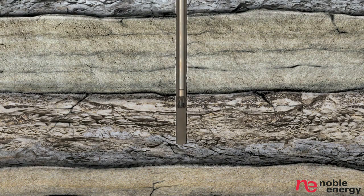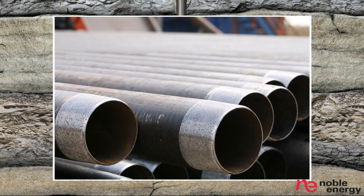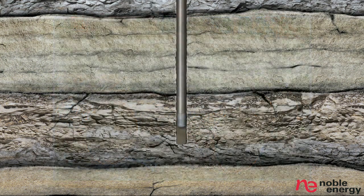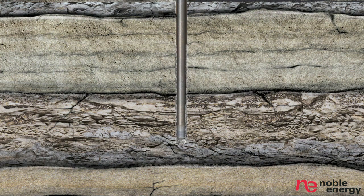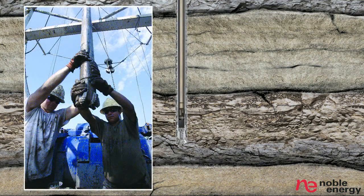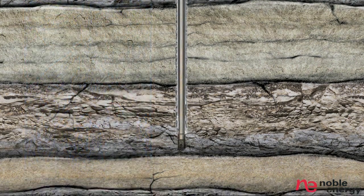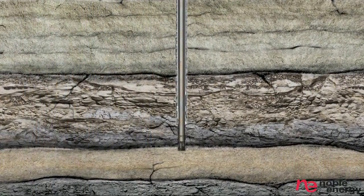The pipe and bit are then removed and surface casing is inserted into the hole. The casing is then secured into place by pumping cement through the casing and through the shoe at the bottom of the hole. The cement barrier and steel casing prevent any contamination of fresh water aquifers.